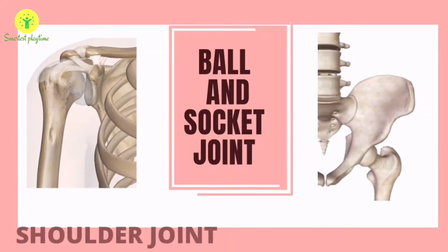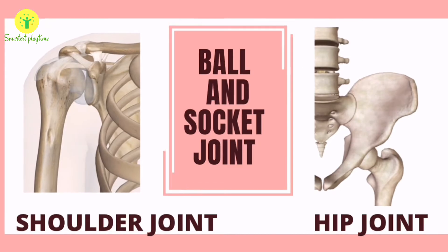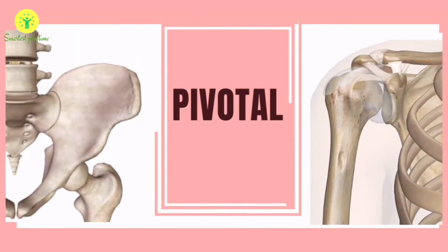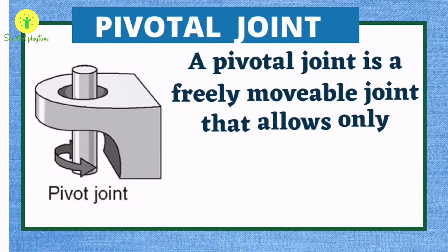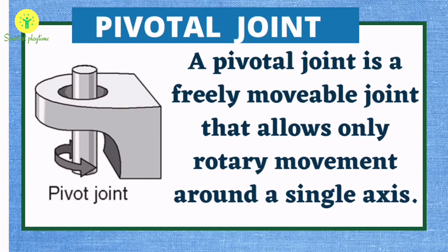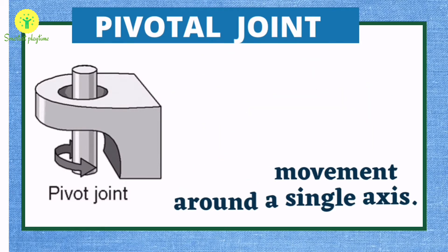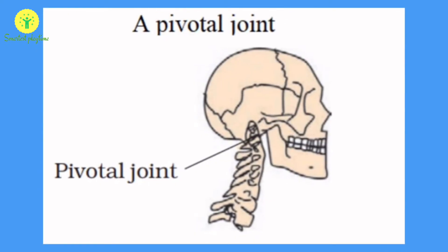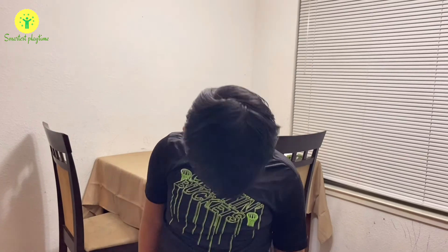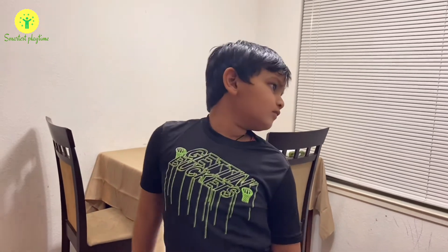Examples of ball and socket joints are the shoulder joint and hip joint. Pivotal joint is also called a rotatory joint. It is a freely movable joint that allows only rotatory movement around a single axis. The joint where our neck joins the head is a pivotal joint. It allows us to bend our head forward, backward, and turn the head to our right and left.